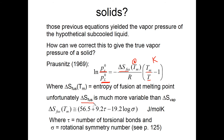Unlike delta S of vaporization, delta S of fusion varies a lot, and that makes sense. When a compound is in the solid phase, it has a specific crystal structure — molecules may need to be oriented a specific way and may be hydrogen bonding with nearest neighbors. Crystal structures are very specific and can be quite different from one chemical to the next. All chemicals have similar entropy in the liquid phase, but very different entropy in the solid phase, so the difference — delta S of fusion — varies greatly from one chemical to another.